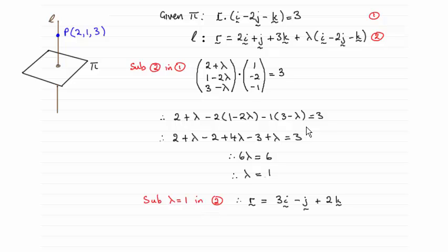When you dot them together, you get this result which will simplify to give you lambda equals 1. Then you can substitute lambda equals 1 into equation 2 here and get that position vector.